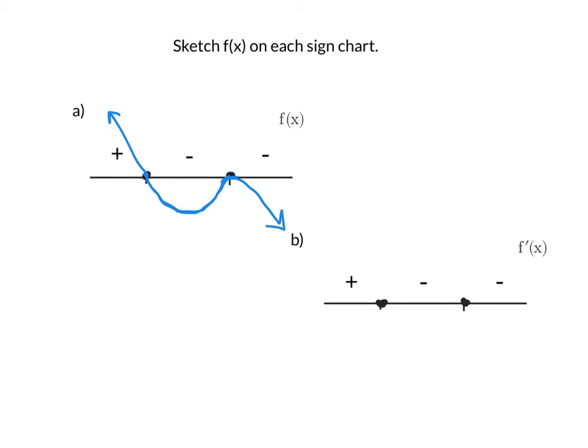In part B, we're asked to graph the original function again, but the sign chart, even though it looks the same, is now of the derivative. So when the derivative is positive, that doesn't mean the original function is above or below the x-axis. It just means that the original function is increasing over that entire interval.